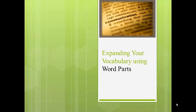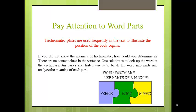Expanding your vocabulary using word parts. Suppose that you came across the following sentence in a human anatomy textbook: 'Trichromatic plates are used frequently in the text to illustrate the position of the body organs.' If you did not know the meaning of trichromatic, how could you determine it? There are no context clues in the sentence, whereas one solution is to look up the word in the dictionary.